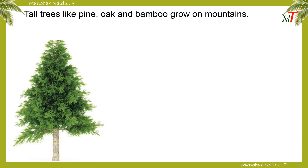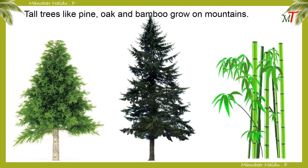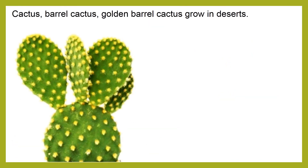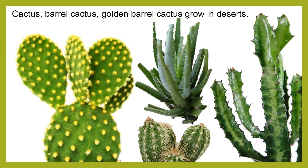Trees like pine, oak, and bamboo grow on mountains. Cactus, barrel cactus, golden barrel cactus, and aloe vera all grow in deserts.